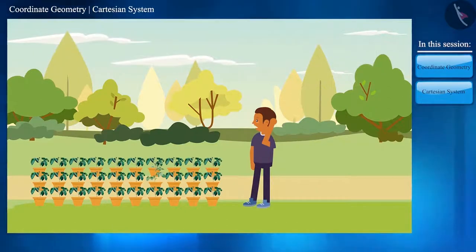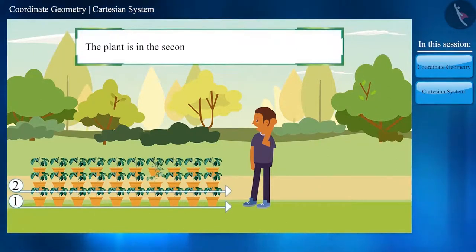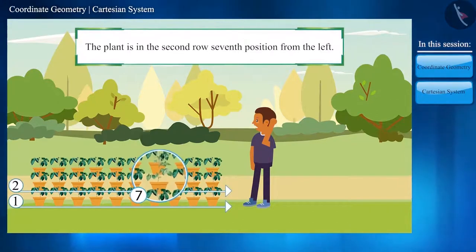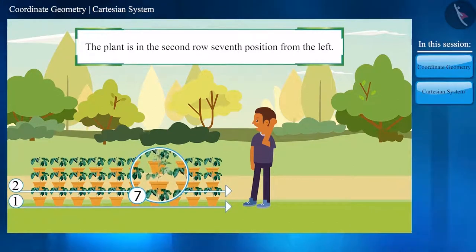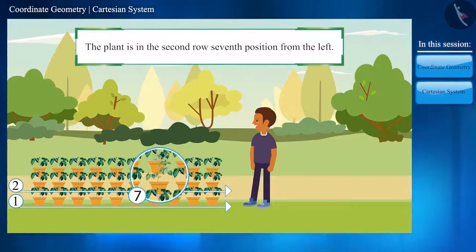If he would have gotten the information that the plant is in the second row, seventh position from the left, then how easy it would have been for Rahul to find the plant.